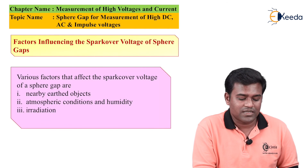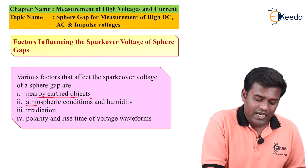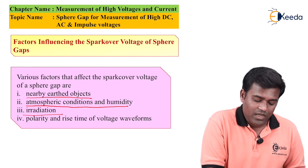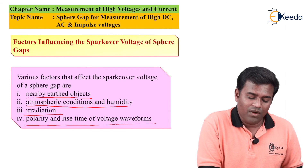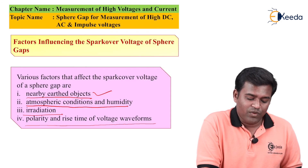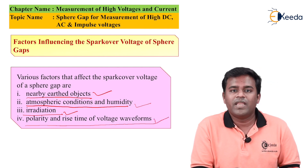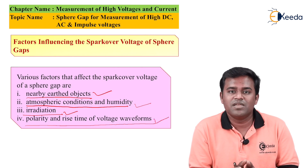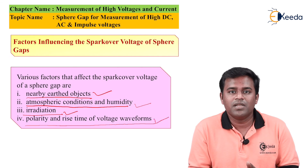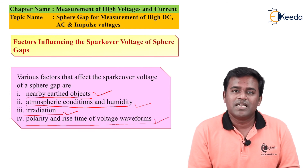The factors influencing spark-over voltage are: nearby earth objects, atmospheric condition and humidity, irradiation, polarity, and rise time of voltage waveforms. By taking care of these factors, sphere gap arrangement for high voltage DC measurement, high voltage AC measurement, and high voltage impulse voltage measurement will be done successfully. This concludes the topic of sphere gap arrangement. Thank you for watching. Stay tuned with eKIDA.